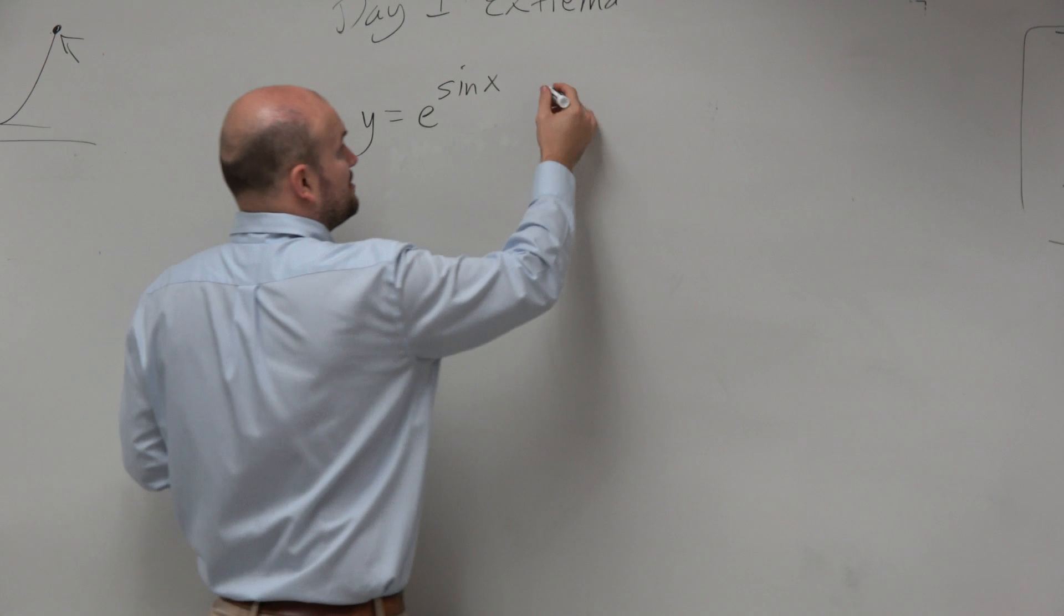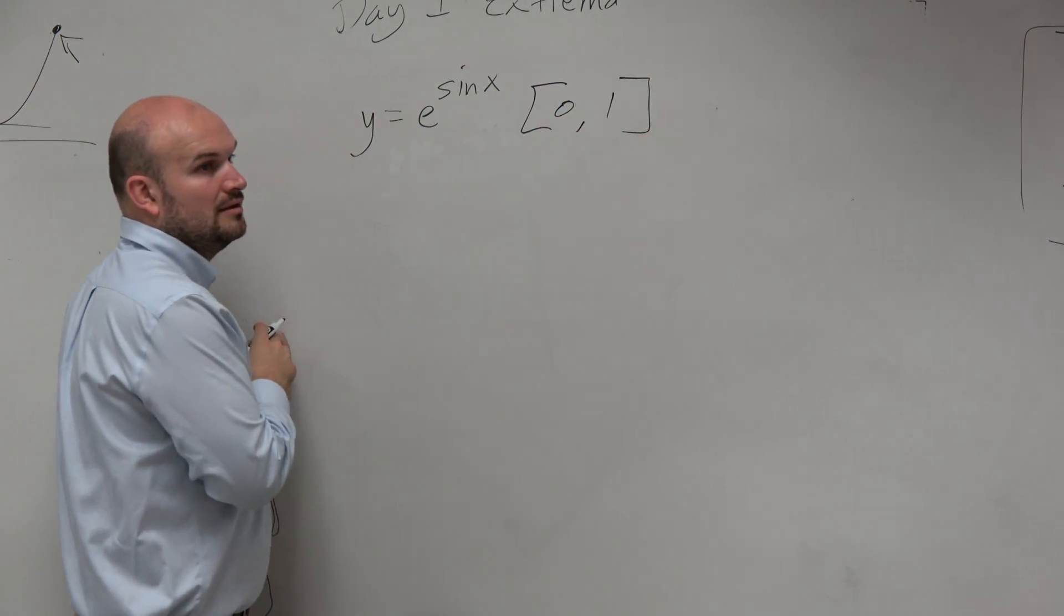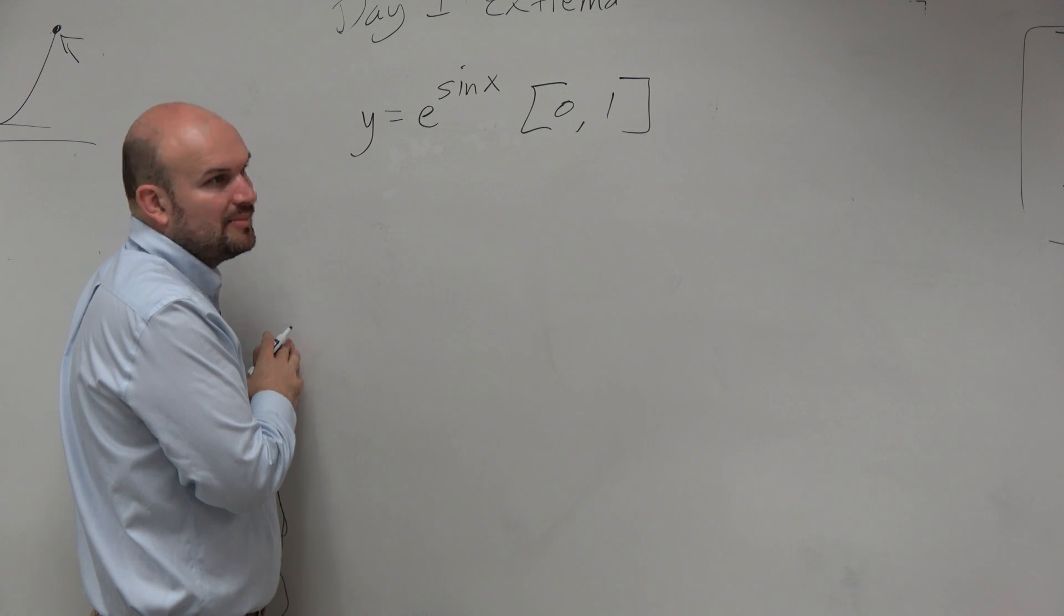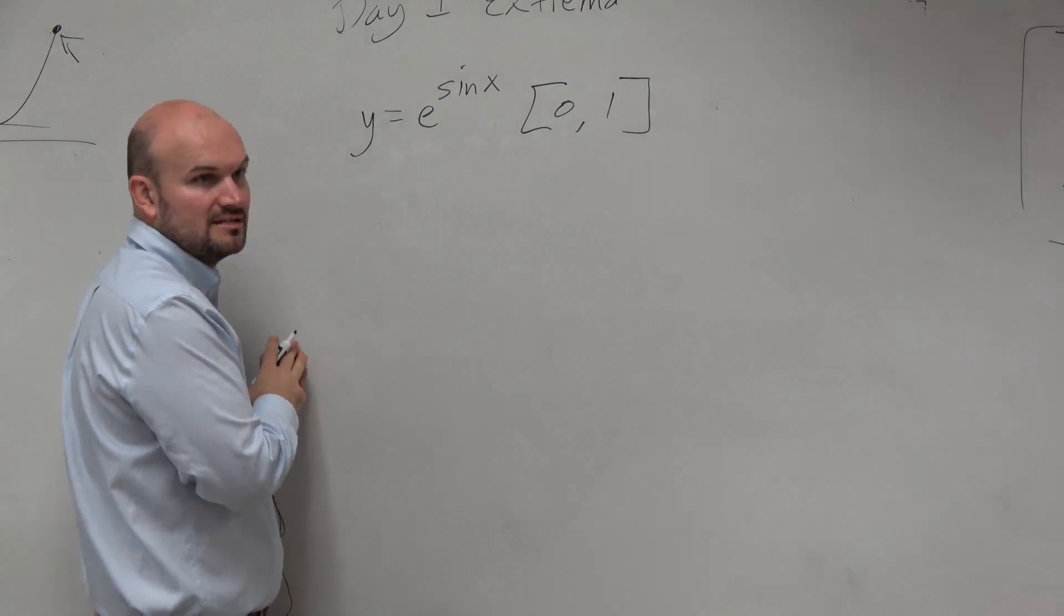But if I was to now maybe put a stipulation here, 0 to 1—oh, yeah, we could probably figure that can work now. Now we can say there is a max and min. Right?